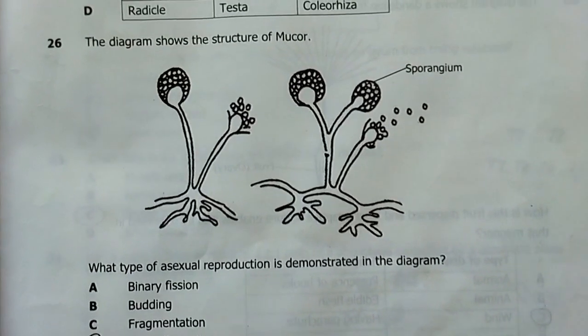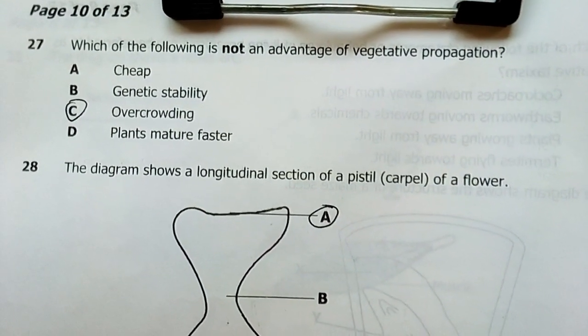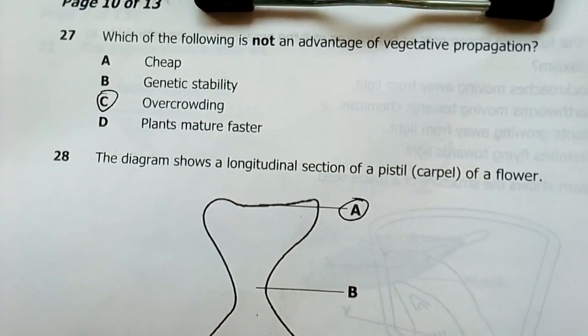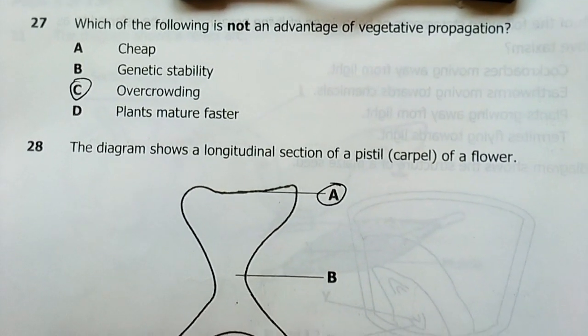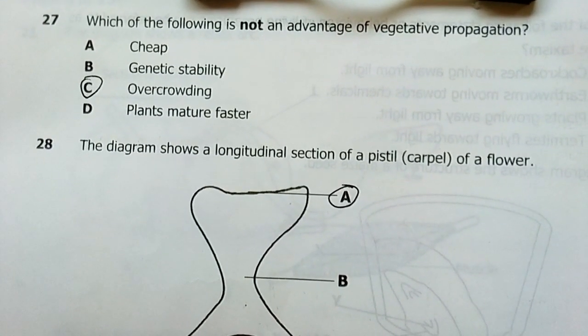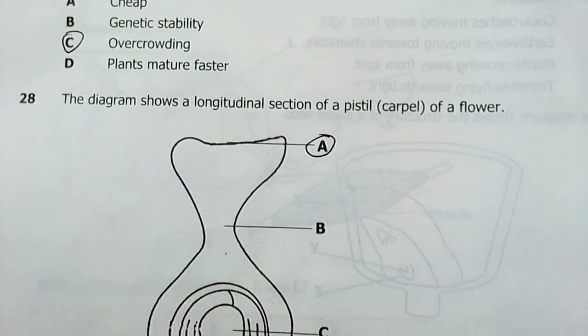We go to question 27. Which of the following is not an advantage of vegetative propagation? Overcrowding. Vegetative propagation is where the plants grow asexually from their parents in the same place. So it brings about overcrowding.